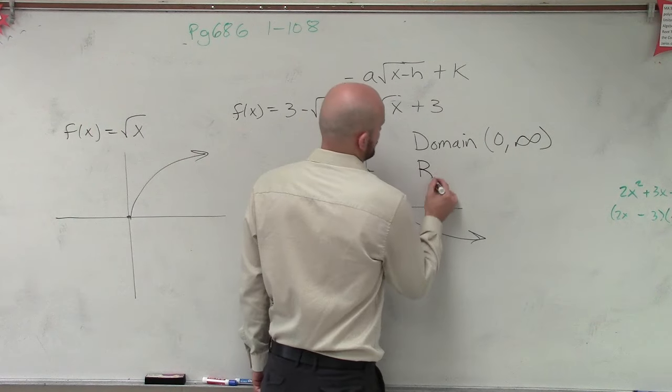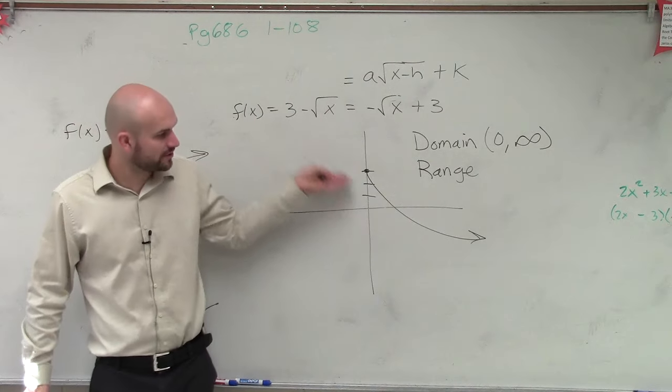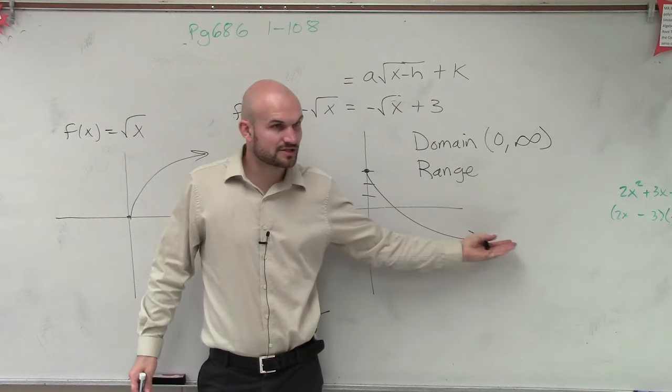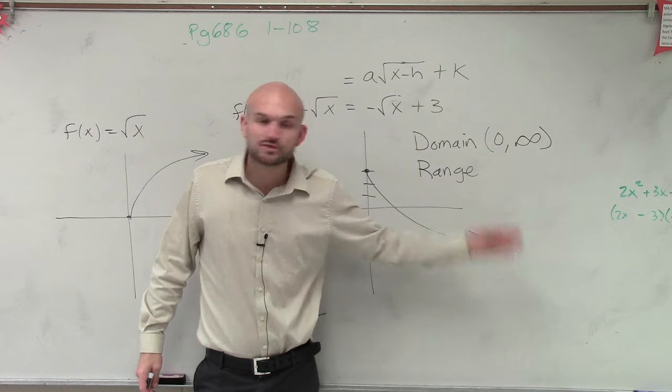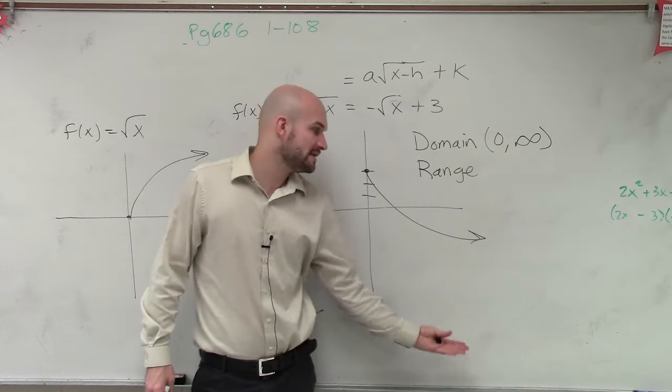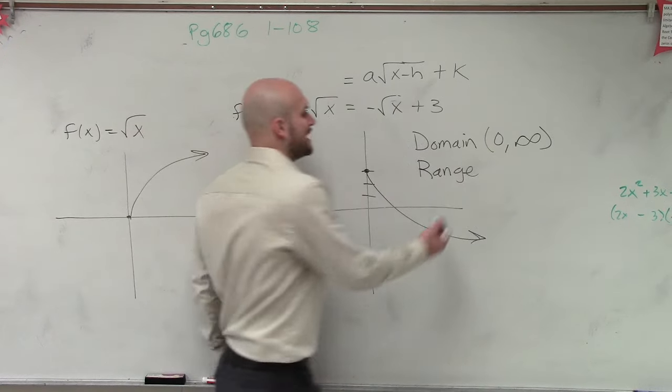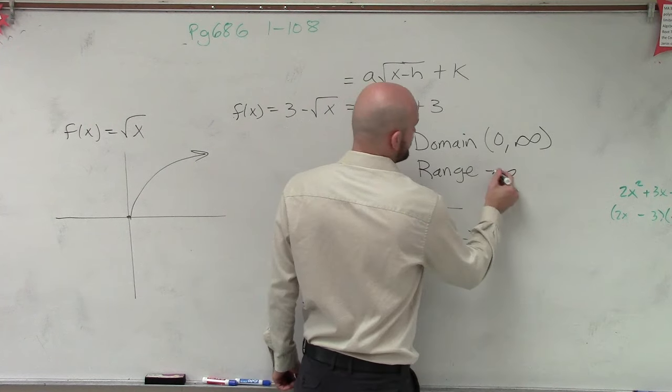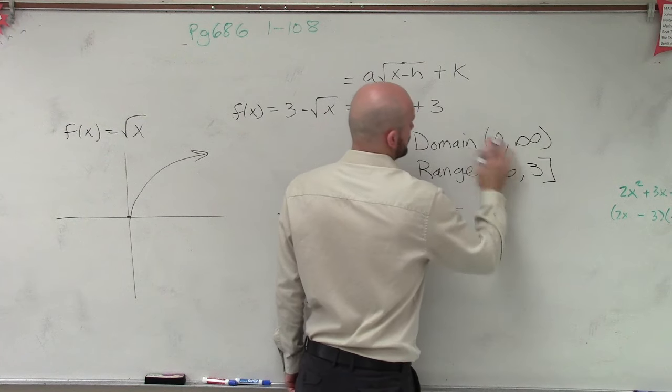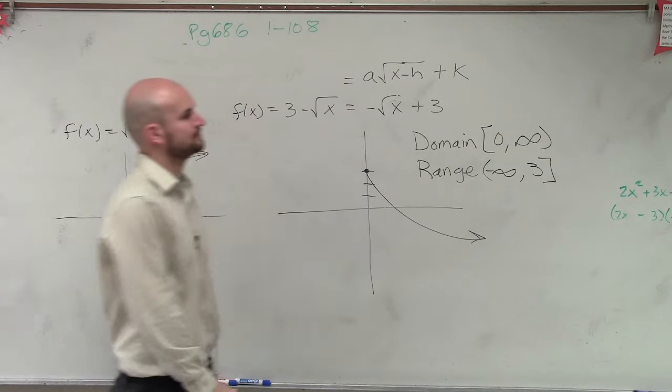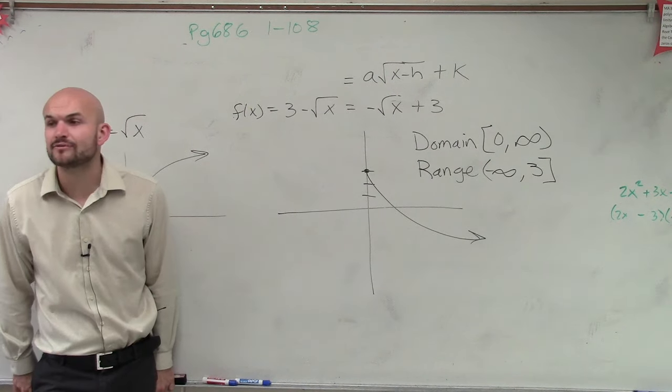Then let's look at the range. The range is the y values. This graph is going down, and it's going to keep on going down. As it keeps on going to the right, it's going to keep on getting lower and lower. So the range goes all the way down to negative infinity. But how far up does that go? 3, right? It doesn't go any higher than 3. So our range is going to be from negative infinity to 3.